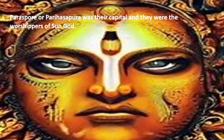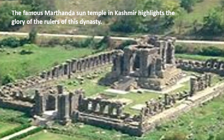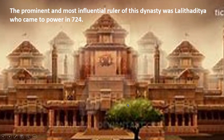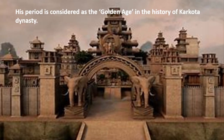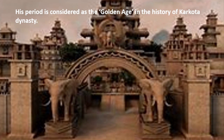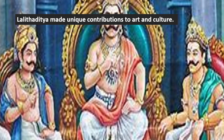Paraspur, or Parihaspura, was their capital, and they were worshippers of the sun god. The famous Marthanda Sun Temple in Kashmir highlights the glory of the rulers of this dynasty. The prominent and most influential ruler of this dynasty was Lalita Ditya, who came to power in 724. His rule of 36 years included the present-day states of Uttar Pradesh, Uttarakhand, and Bihar. His period is considered a golden age in the history of the Karkota dynasty. Lalita Ditya made unique contributions to art and culture.